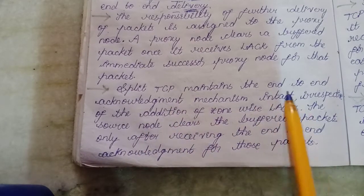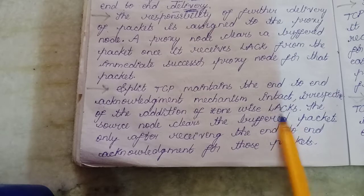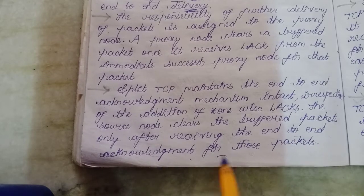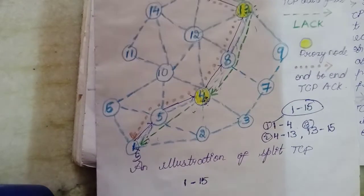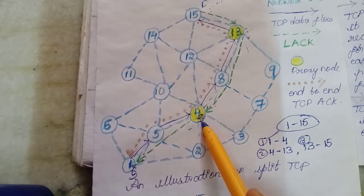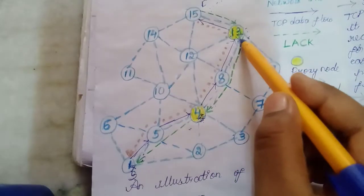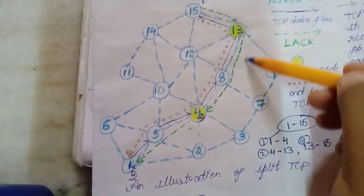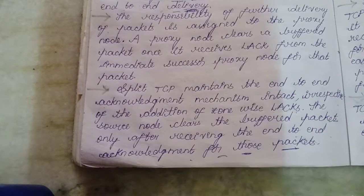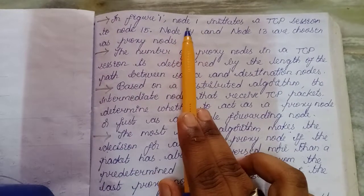Split TCP maintains the end-to-end acknowledgement mechanism intact, irrespective of the addition of local acknowledgements. The source node clears its buffered packets only after receiving the end-to-end acknowledgement for those packets. For example, if the source node sends a packet to node 4, node 4 buffers it and forwards it to node 13. Node 13 also buffers it and sends a LAC to node 4, then node 4 removes the buffered packet. This is the end-to-end acknowledgement mechanism.